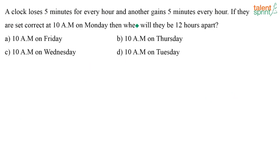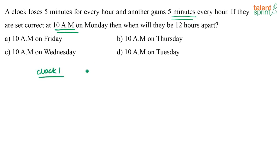A clock loses 5 minutes for every hour and another gains 5 minutes every hour. If they are set correct at 10 AM on Monday, then when will they be 12 hours apart? This question is based on clocks which gain or lose time. Both clocks are set correctly at 10 AM, so we have clock 1 and clock 2, both showing 10 AM.